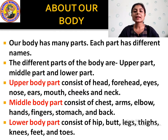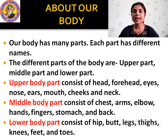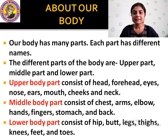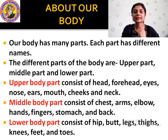What are the different parts that make up the upper body? The upper body part consists of head, forehead, eyes, nose, ears, mouth, cheeks, and neck. These are the parts of the upper body.